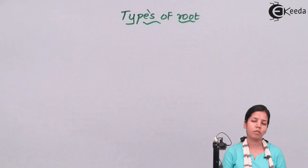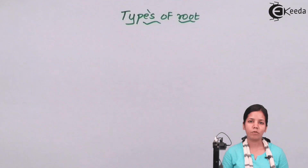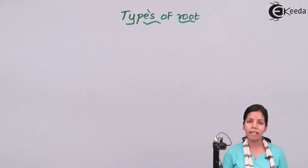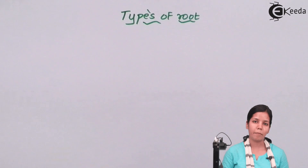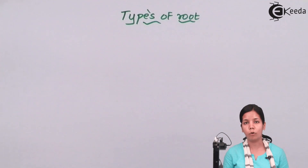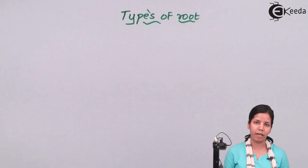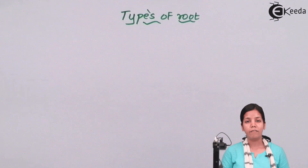The next form of roots are nothing but adventitious roots — the fibrous roots of the rice plant. They basically develop from any other part of the plant except the radicle. Since the radicle is short-lived in certain monocot plants like maize or wheat, they can develop from the stem base.